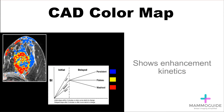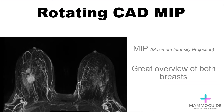Washout and plateau kinetics are more concerning for malignancy. A MIP, or maximum intensity projection, provides a great overview of both breasts and is extremely useful in evaluating multifocal or multicentric disease.